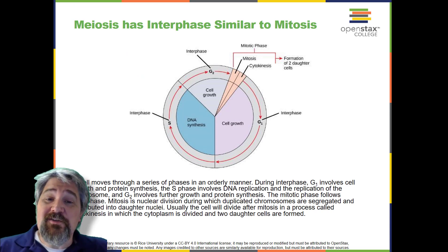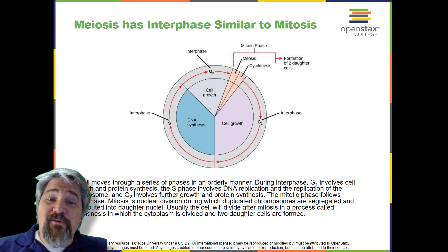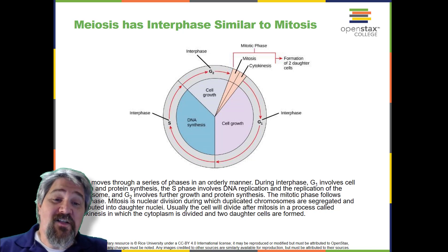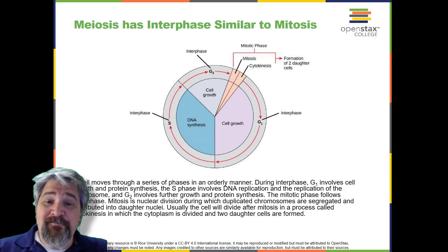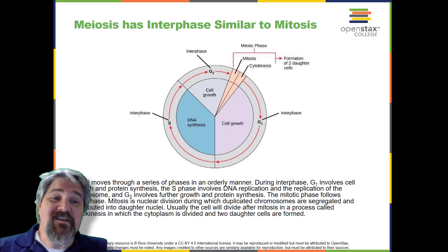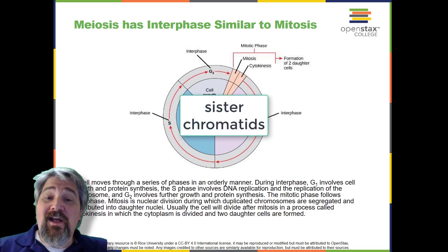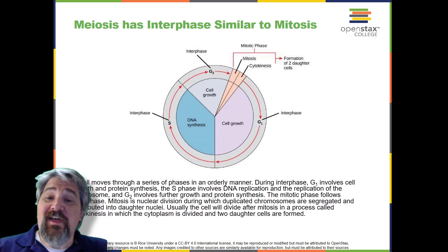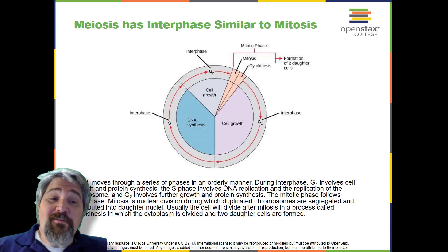Meiosis is preceded by an interphase consisting of the G1, S, and G2 phases, which are nearly identical to the phases preceding mitosis. The G1 phase is focused on cell growth. In the S phase, the DNA of the chromosomes is replicated. In the G2 phase, the cell undergoes final preparations for meiosis. During DNA duplication in the S phase, each chromosome becomes composed of two identical copies called sister chromatids, held together at the centromere until pulled apart during meiosis II. In an animal cell, centrosomes that organize the microtubules of the mitotic spindle also replicate, preparing the cell for the first meiotic phase.